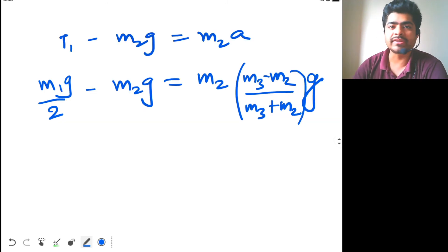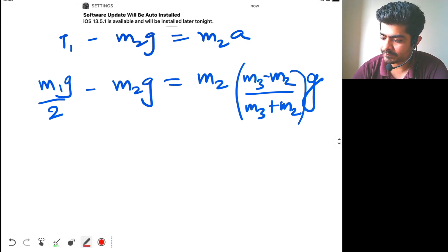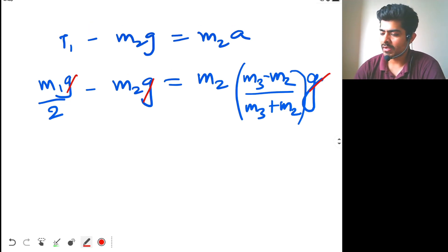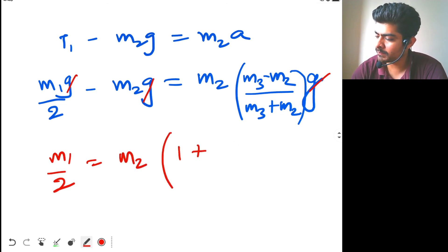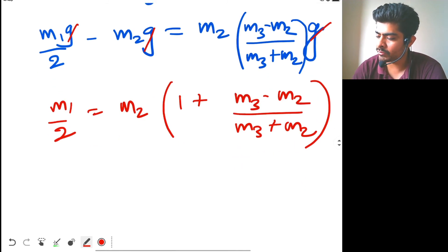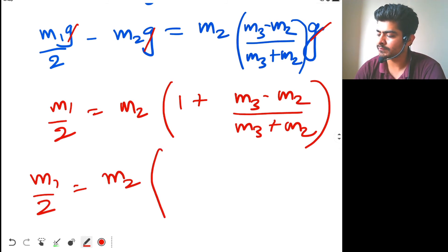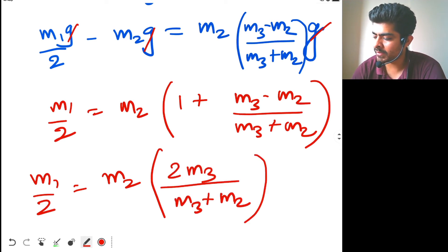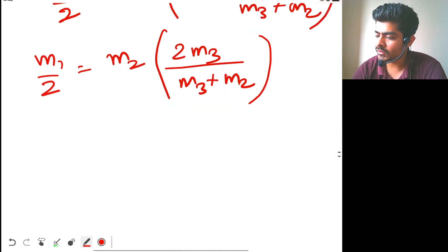We can now say that m1 by 2 is equal to m2[1 plus (m3 minus m2) upon (m3 plus m2)], so m1 by 2 is equal to m2 times 2m3 upon (m3 plus m2). If I write down 2 by m1, this will be equal to (m3 plus m2) divided by 2m2m3. Take 2 over here, so this will become 4.